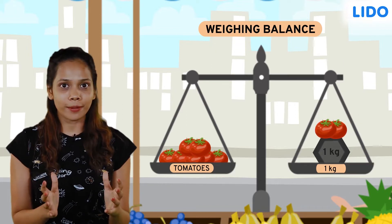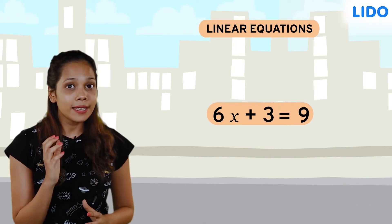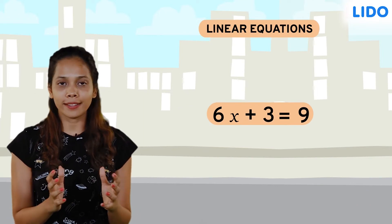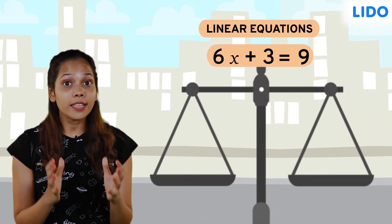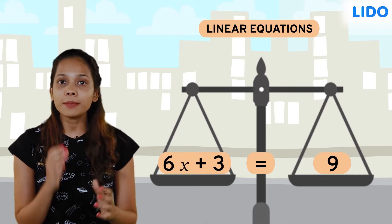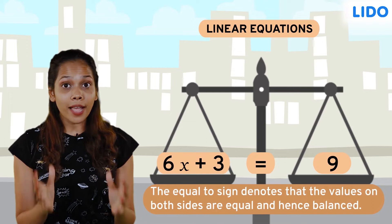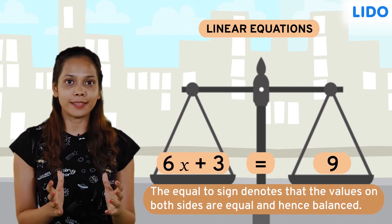Now here's something interesting. The concept of solving linear equations by balancing in math works just like this. Just like a weighing balance, a linear equation also has 2 terms on 2 sides separated by an equal to sign. The equal to sign denotes that the value on both sides are equal and hence the balance.